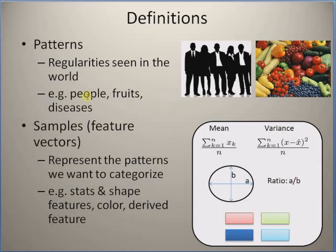Examples of statistical features include the first and second moments of a PDF, that is the mean and variance. Shape features include the length and breadth of an object, and also sometimes the major axis and minor axis of an irregular object, the ratios of these axes, and other shape features.